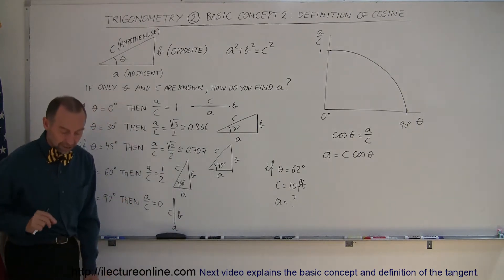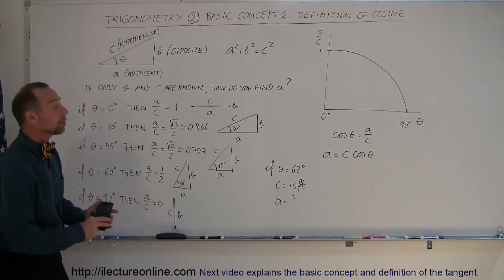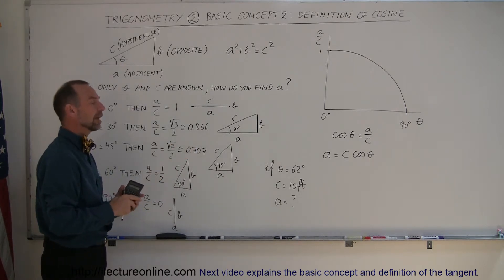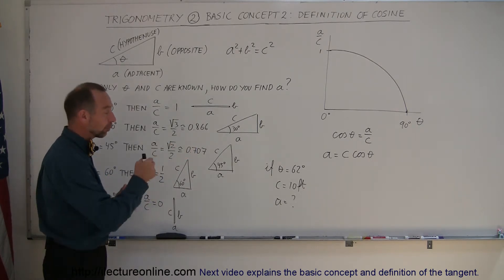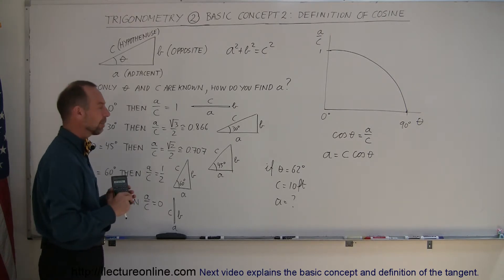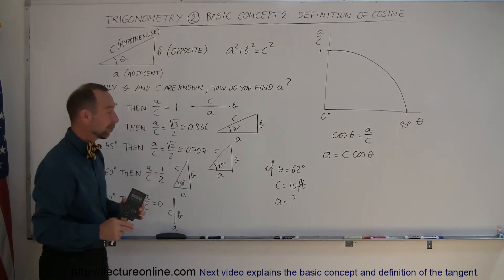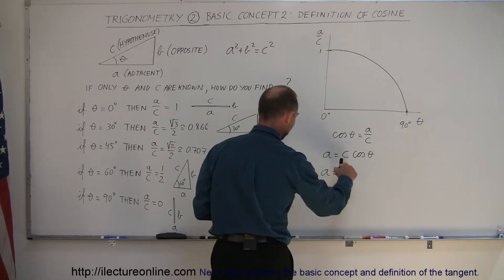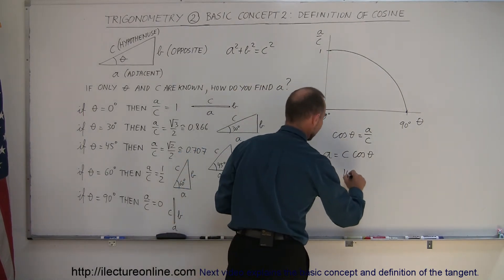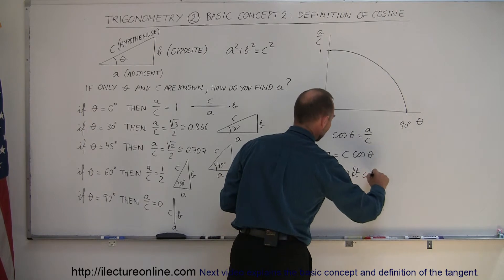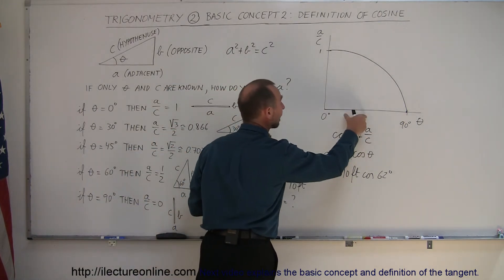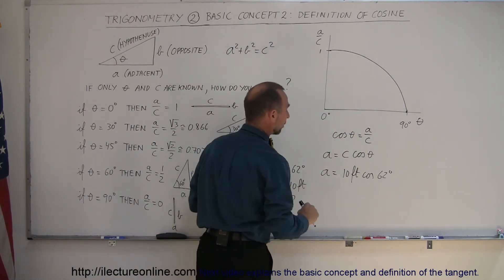So for that, you're going to need a calculator or a table listing out the appropriate ratios for all the various angles of theta. Now in older textbooks, you'll still find those tables. In newer textbooks, they may not even bother anymore, because now everybody has one of those little handy calculators. So, a is going to be equal to c, the hypotenuse, 10 feet, times the cosine of theta, and theta is now going to be 62 degrees. Remember, the definition of the cosine is simply the ratio of the adjacent side over the hypotenuse.